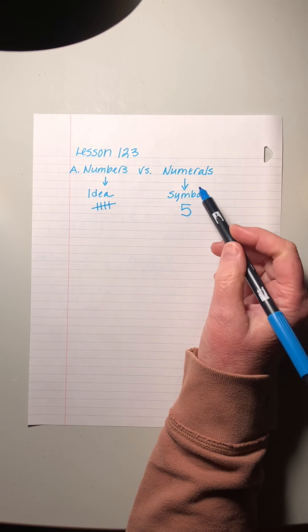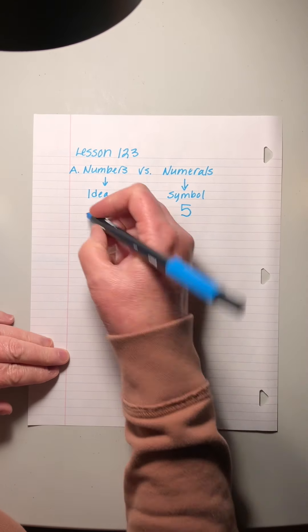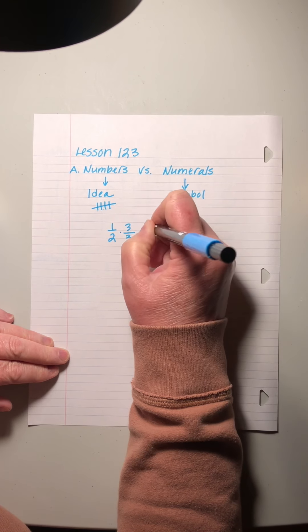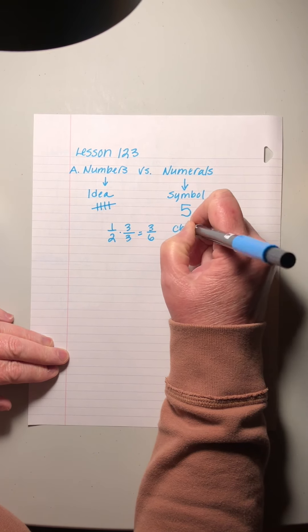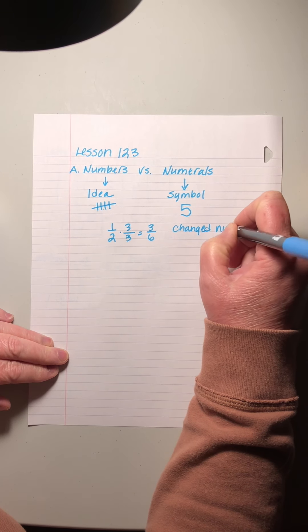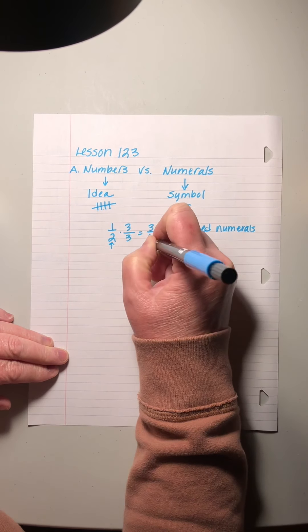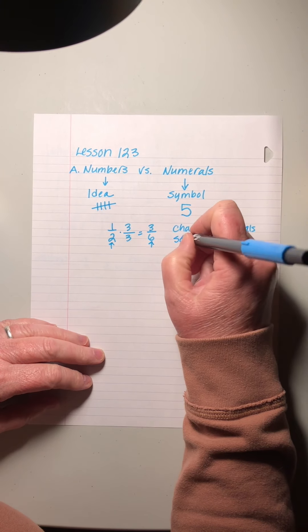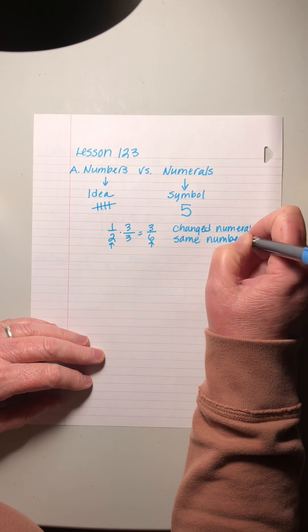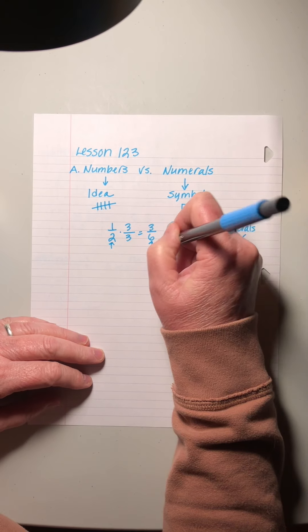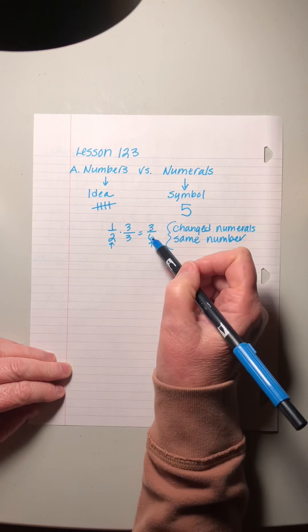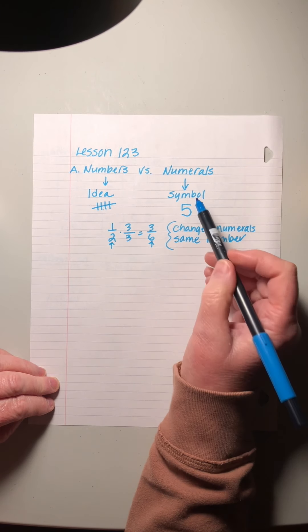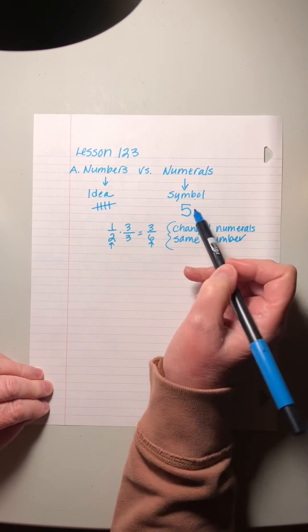We can change the numerals without changing the number. So for example, if we take one half and we multiply it by, let's say, three over three, we get three-sixths, right? Those are different symbols. They look different, but the idea is the same. So we say it's the same number, even though obviously it looks different because the idea is exactly the same. Three-sixths is the same idea as one half. It's just cutting smaller pieces. We changed the numerals, but the number remains the same. The numerals are the symbol. The numbers are the idea that that symbol represents.